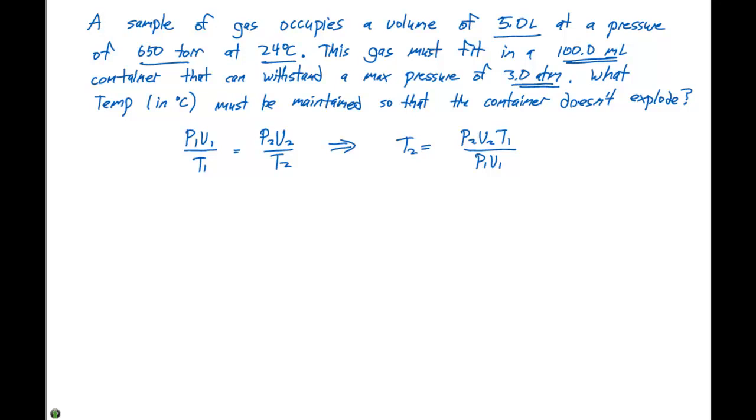So when we plug these pieces into the equation, we need to keep those in mind. We're going to solve for T2 and that's going to equal P2, which is 3.0 atmospheres, times V2, which is going to be 0.1000 liters. One of the things that we have to make sure we do here is we need to make sure our units are going to cancel out. We're given milliliters in one case and liters in the other case, so I'm going to be sure to convert this over to liters. That's going to be times T1, which is 24 degrees Celsius. And remember, we're going to need to add 273 here to get us to Kelvin.